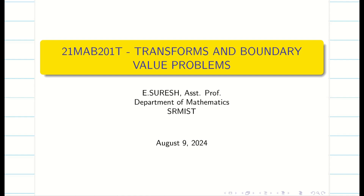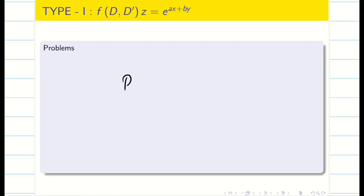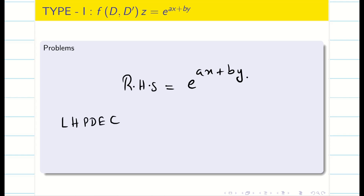Welcome to this session. We are going to solve problems which contain non-zero RHS. Specifically, we will take the RHS as e^(ax+by) for the linear homogeneous partial differential equation with constant coefficients.